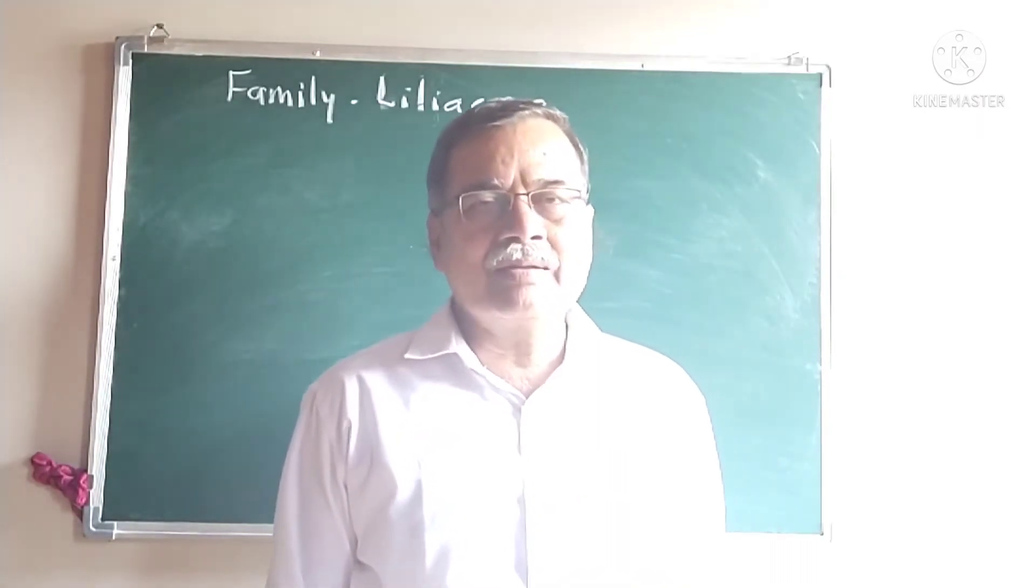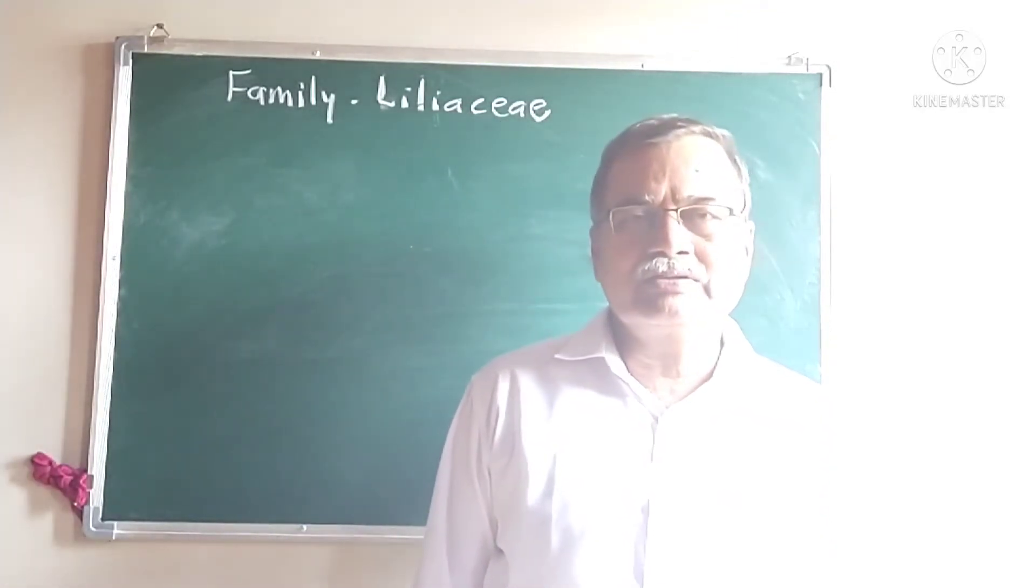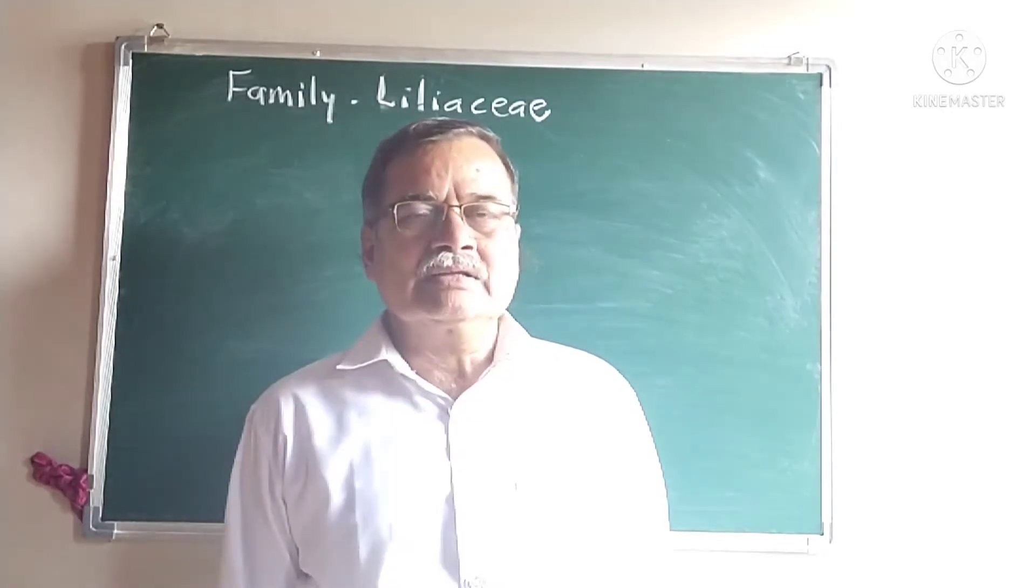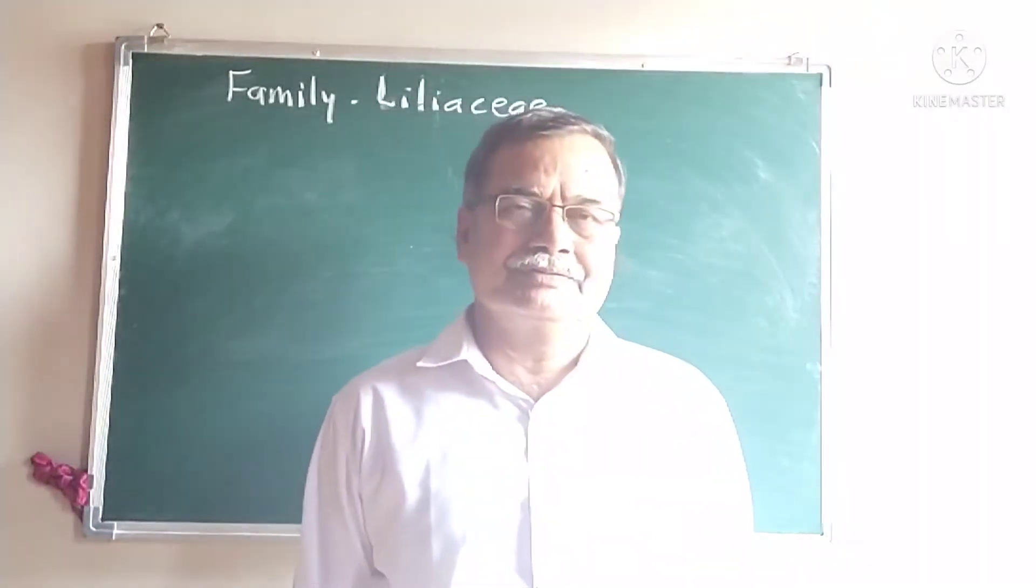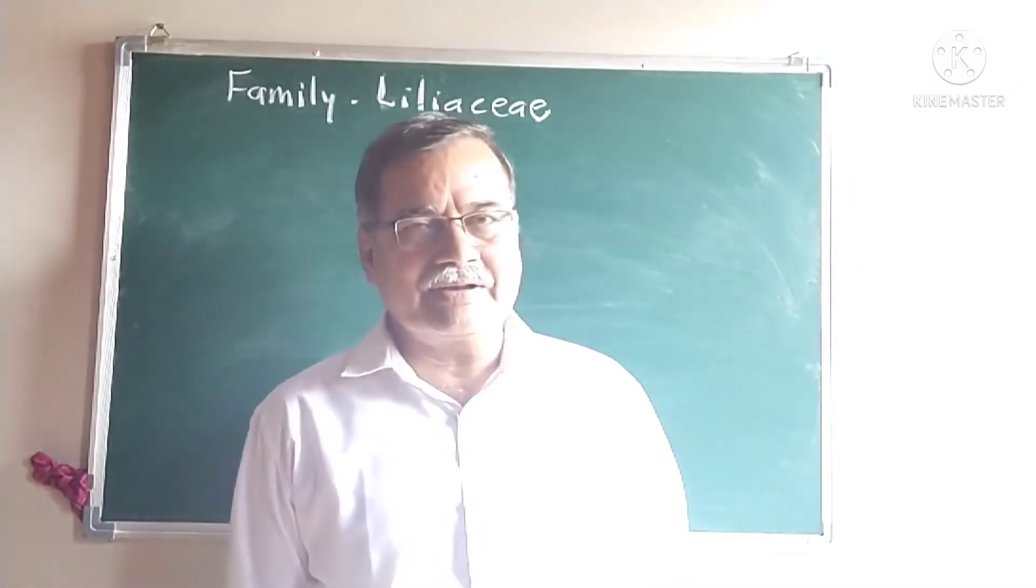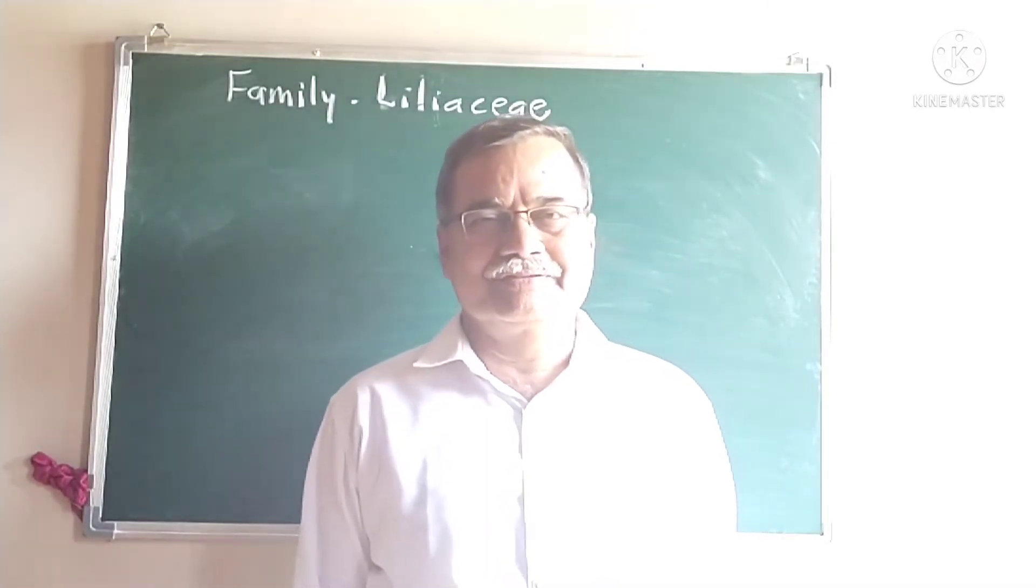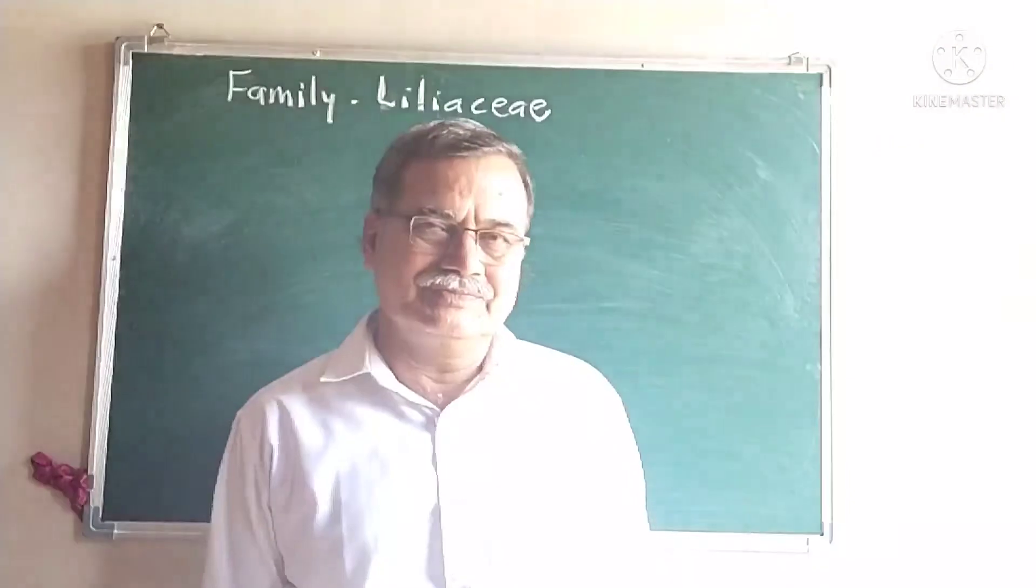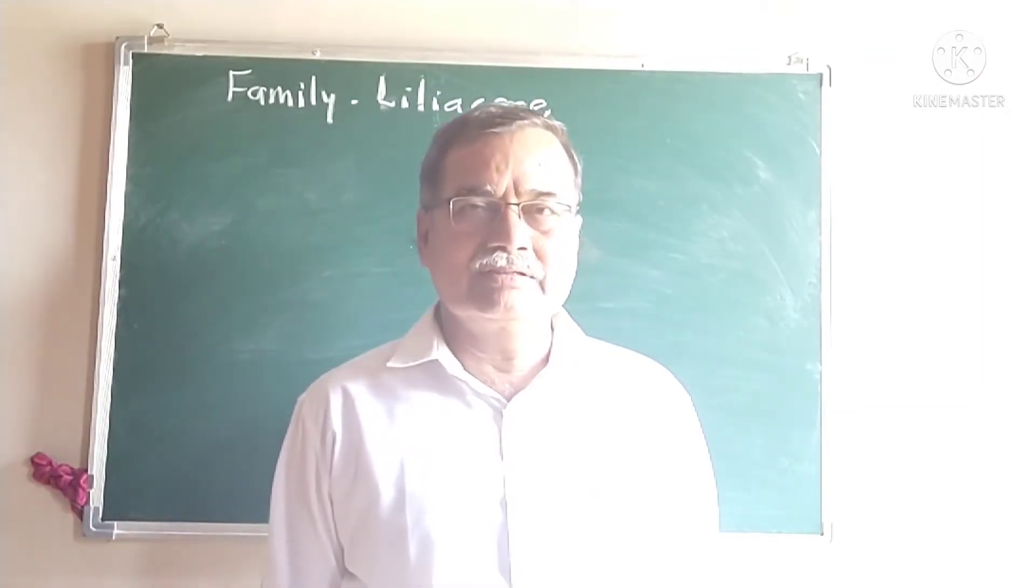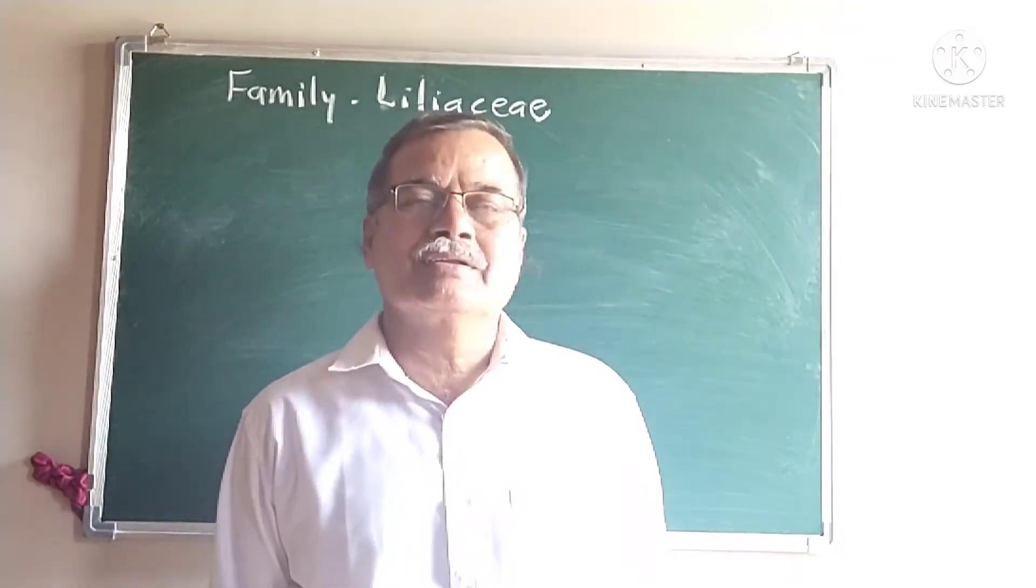A climber example is Asparagus racemosus, Gloriosa superba. It belongs to the root system, adventageous root system, also known as the fibrous system. Stem is generally underground in the form of rhizome, bulb, corm, central. The stem underground stem is known as the disc. Some plants bear the body in the form of the rhizome.